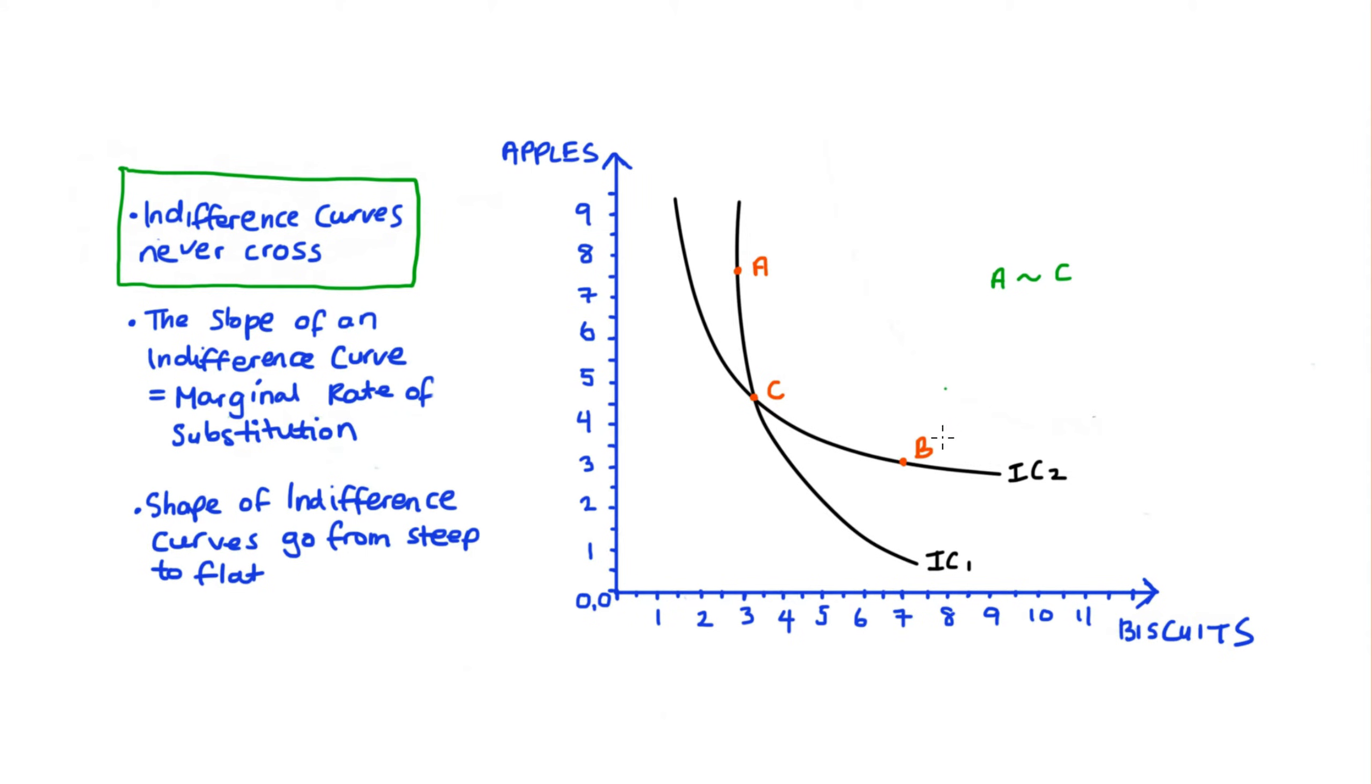Likewise, because B is on the same indifference curve as C, they're both on IC2, then we must be indifferent between bundle B and bundle C. But if we're indifferent between A and C, and we're also indifferent between B and C, then it follows that we must be indifferent between A and B.